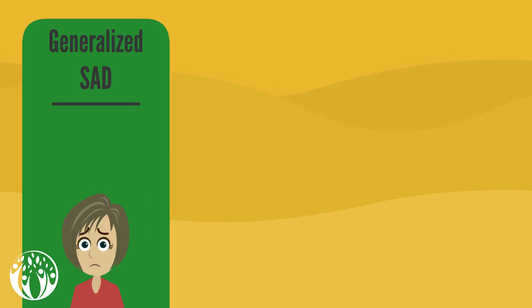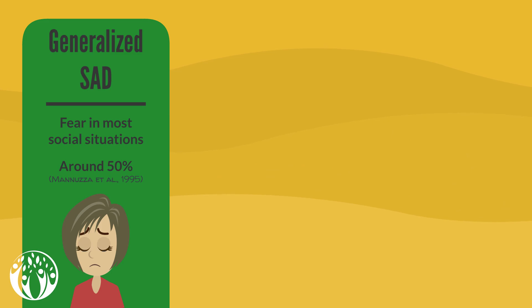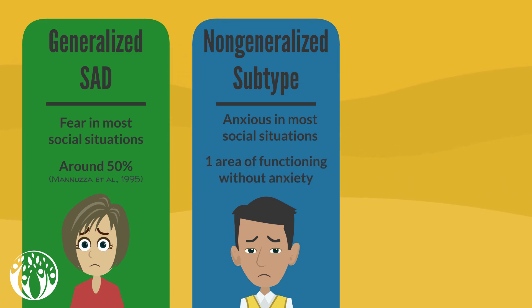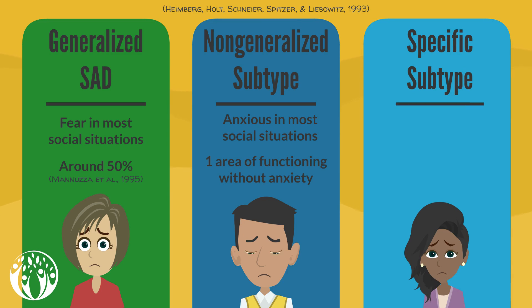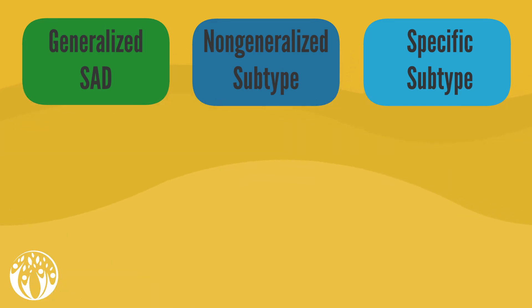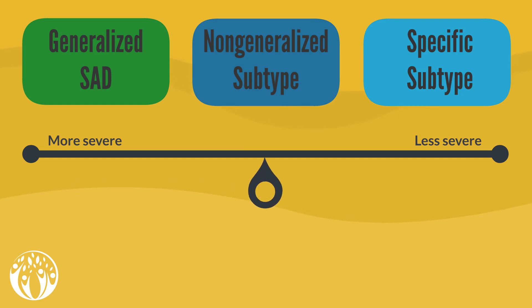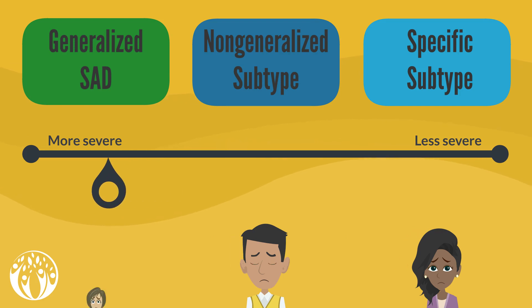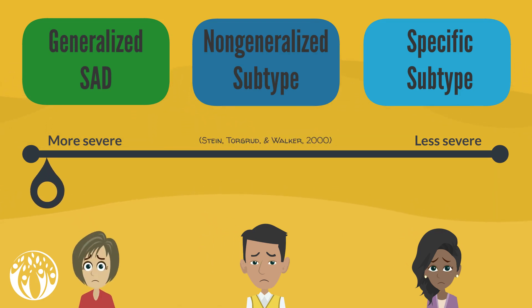The most common way of differentiating SAD sufferers is based on the number of situations they fear. The generalized SAD subgroup is defined by fear in most social situations and accounts for roughly half of all sufferers who seek help. The non-generalized subtype also fears most social situations but displays one area of normal functioning without anxiety. The specific subtype only fears a few specific social scenarios, with public speaking being the most common feared situation. We can regard social anxiety disorder along a continuum, with the specific subtype at one end and the non-generalized and generalized subtypes along it as the number of feared situations and functional impairment increase.